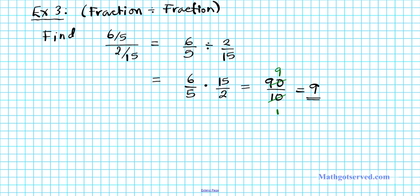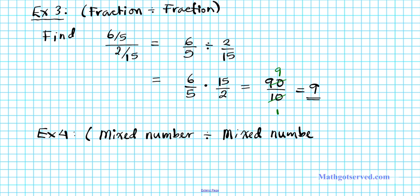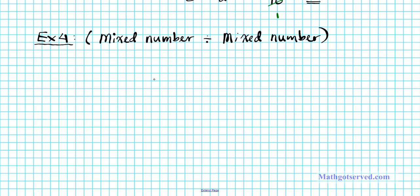Now let's take a look at example 4. Example 4 involves dividing 2 mixed numbers: a mixed number divided by a mixed number. We are to find the result of dividing 5 and a half by 2 and a half.